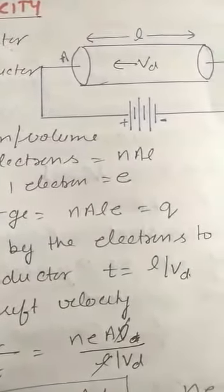Hello students of the class plus 2. Now in this video we start the relation between the current and drift velocity. In the last video I told you about the drift velocity, the velocity with which electrons drift towards the positive end of the conductor, and that is known as drift velocity.